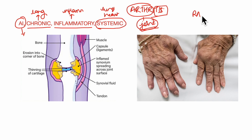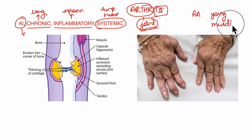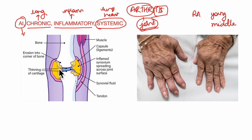Rheumatoid arthritis mainly affects young and middle-aged adults and is characterized by certain changes that occur in the joints. Here you can see the picture of a joint — this is a bone, this is a capsule surrounding it, and here is the synovium. There are proliferative and destructive changes that occur in the synovial membrane, the periarticular structures (the structures that surround the joints), the skeletal muscles, and also the perineural sheets.